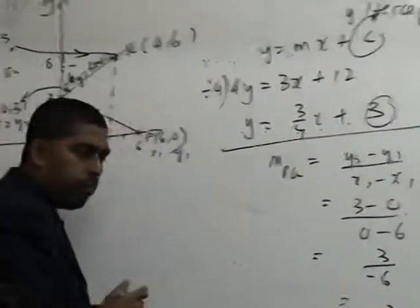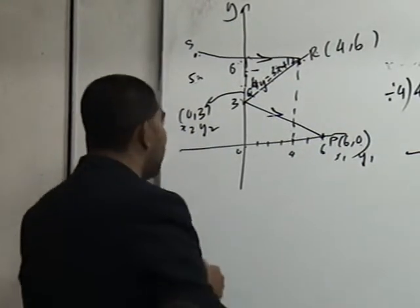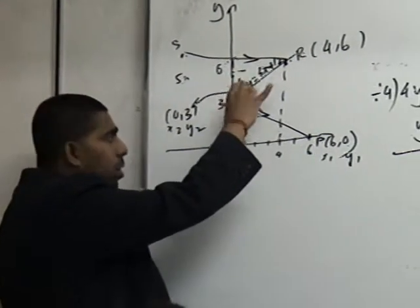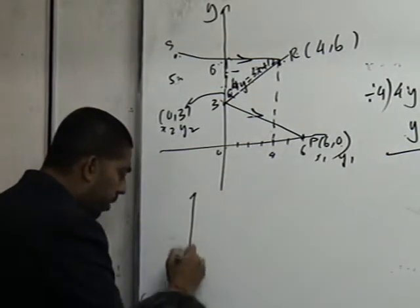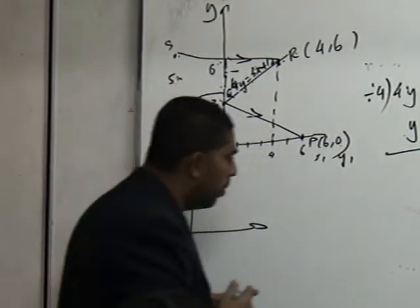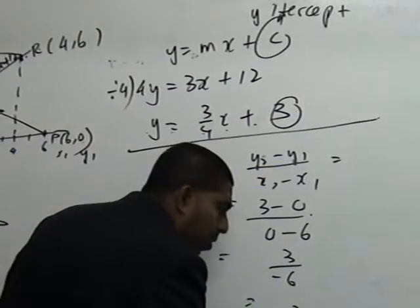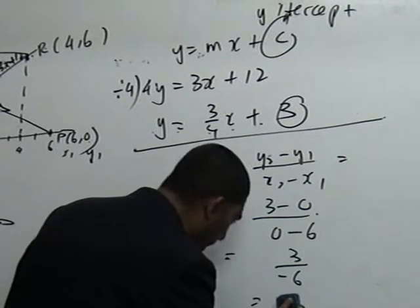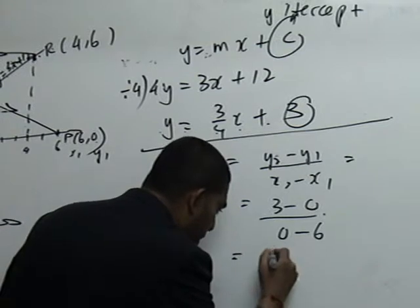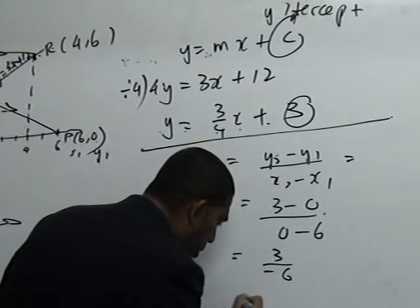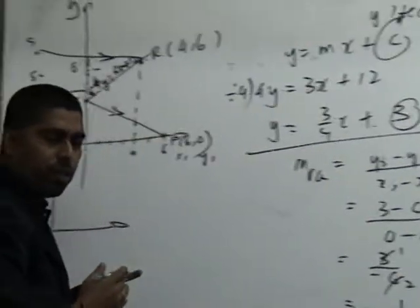That's it. But if those of you who are good, you must simplify. 3 over negative 6, so negative 1 over 2. Because 3 and 6 simplify to 1, 2. Thank you.